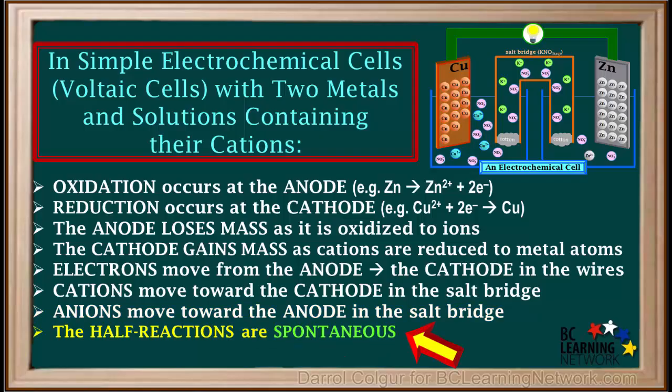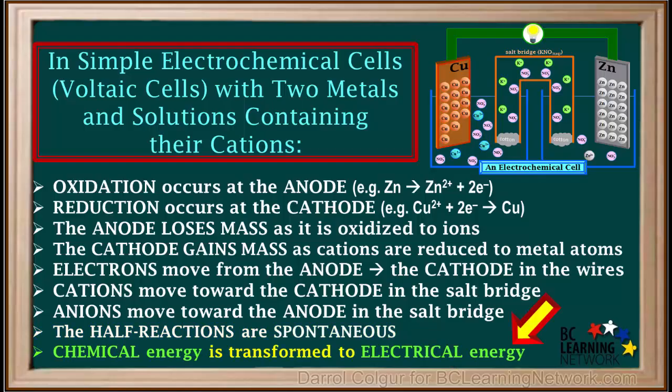It is important to remember that reactions in an electrochemical cell are always spontaneous. In another type of cell we'll look at later, an electrolytic cell, the reactions are non-spontaneous. In all electrochemical cells, chemical energy is transformed into electrical energy. It is good to study and be familiar with all these facts about electrochemical or voltaic cells.